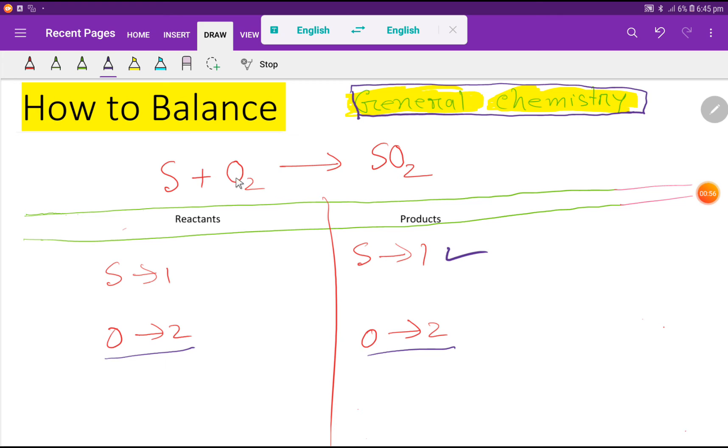At last we have to change this arrow sign to an equal sign. Actually this sulfur has one coefficient here and here, one here, one. If the coefficient is one we don't write that coefficient. So this is very easy to balance. Thank you for viewing this video.